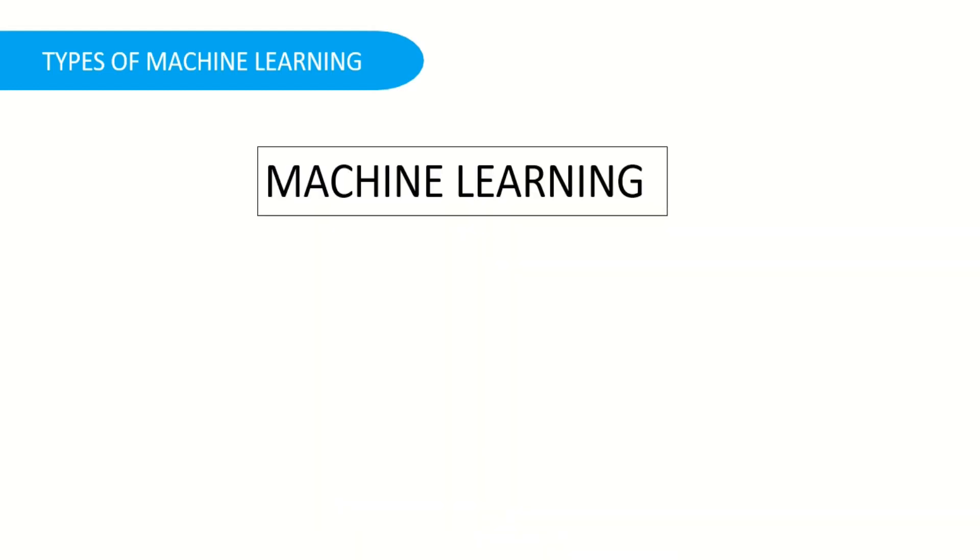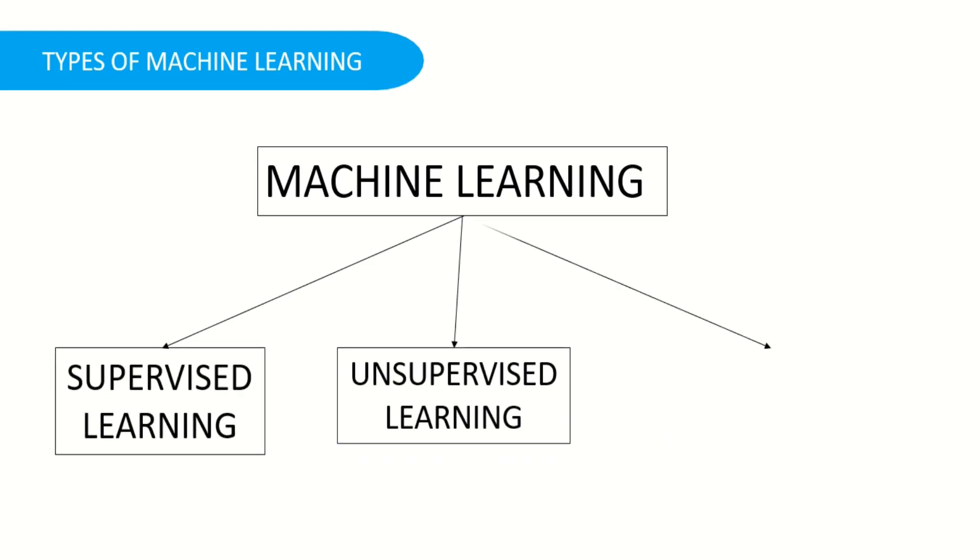So machine learning can be broadly classified into three categories. That is supervised learning, unsupervised learning and reinforcement learning.